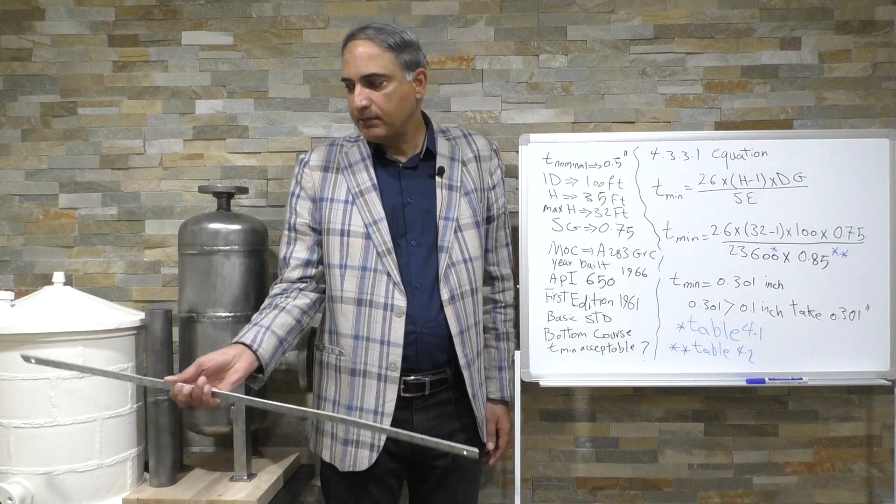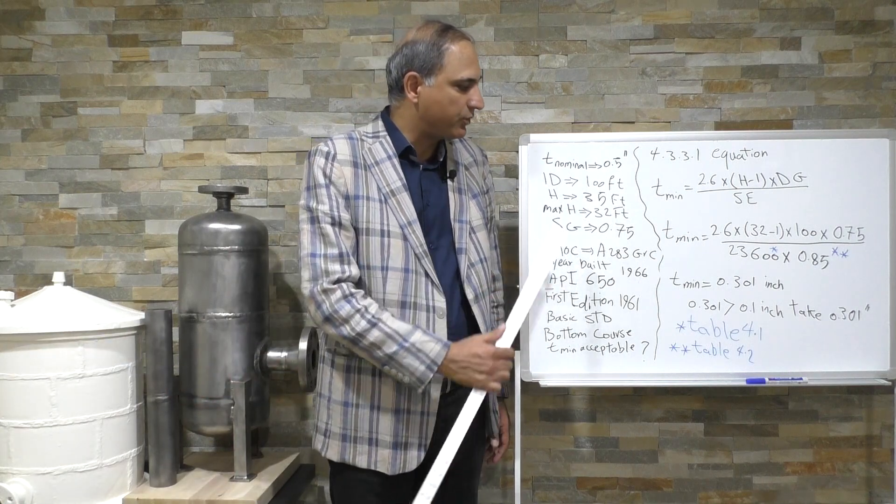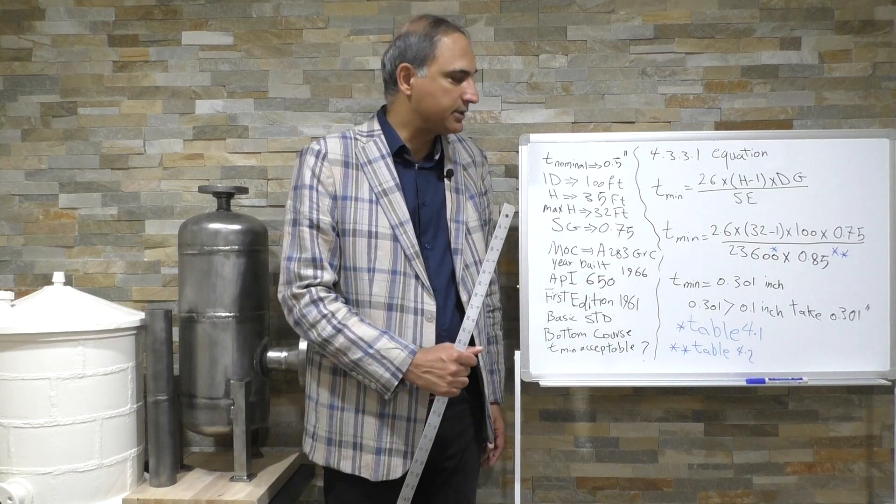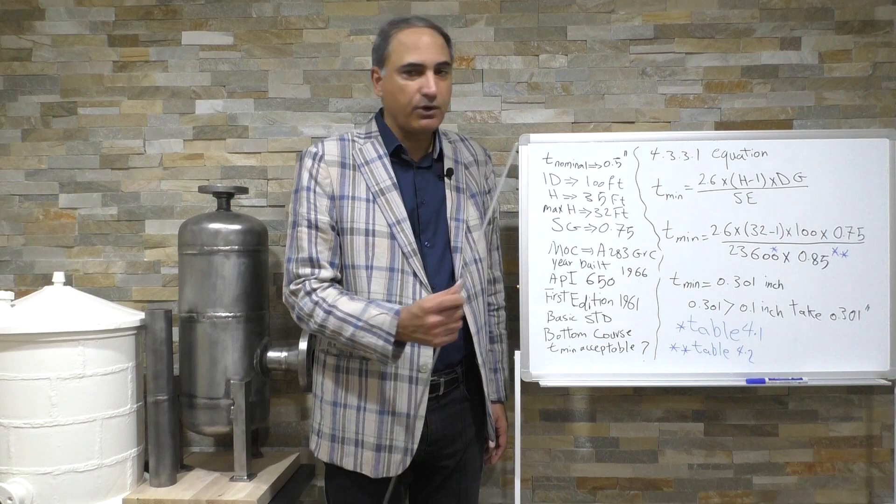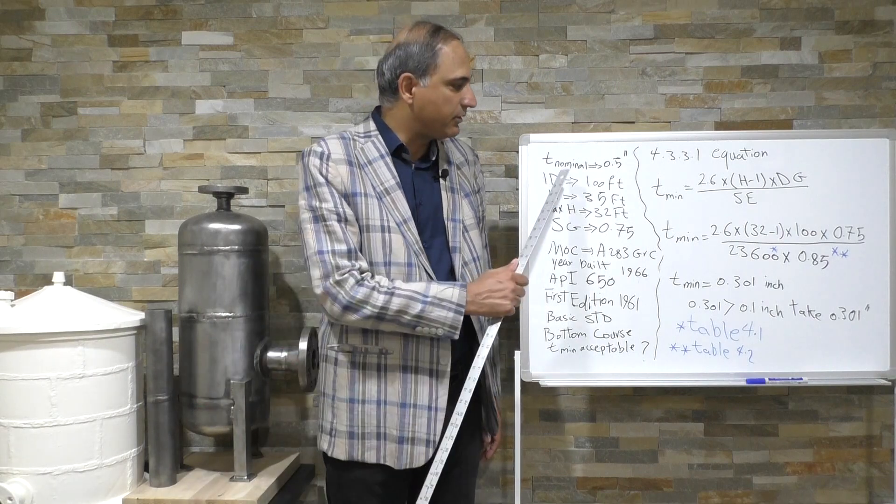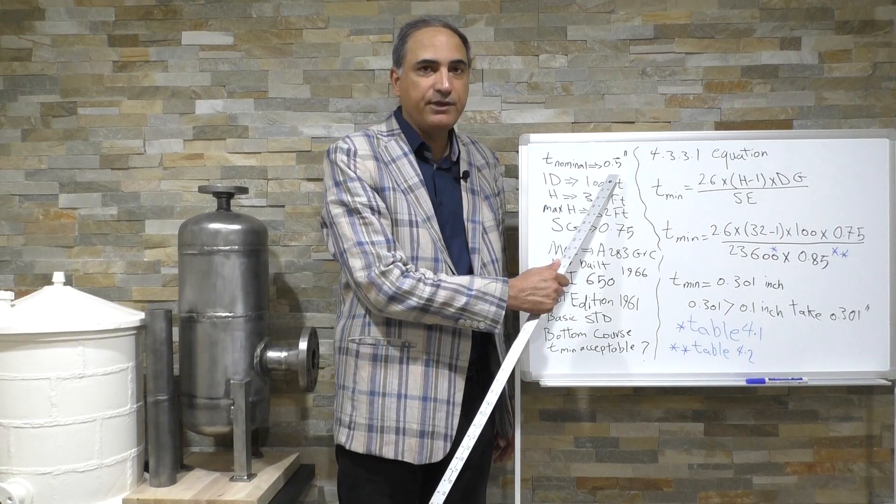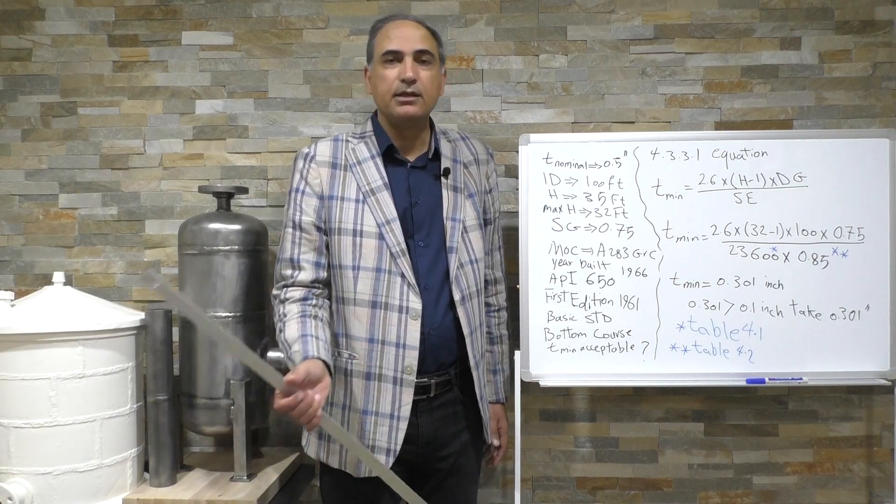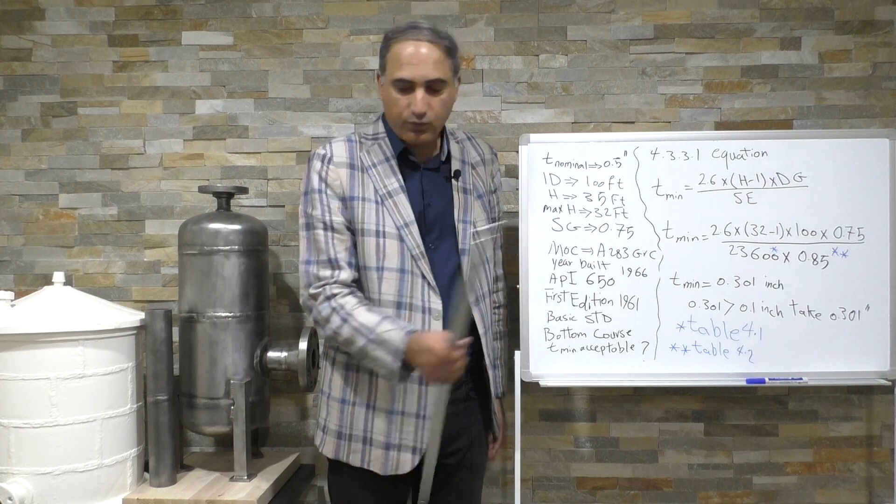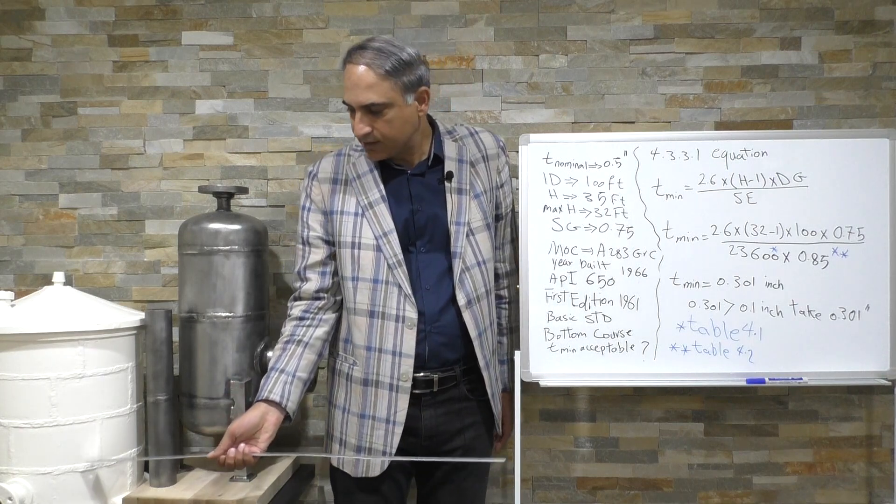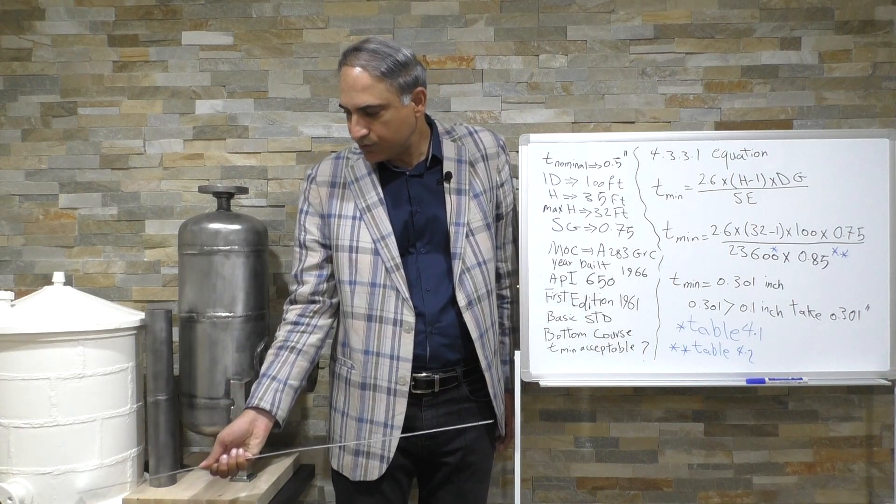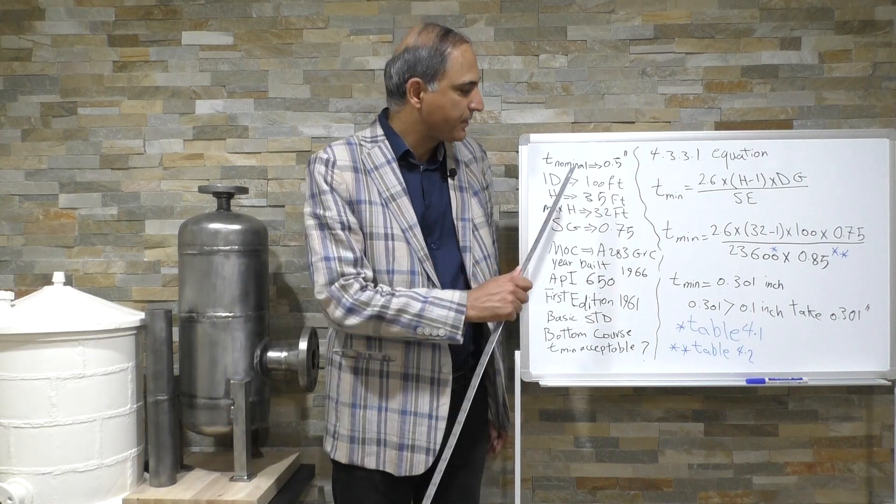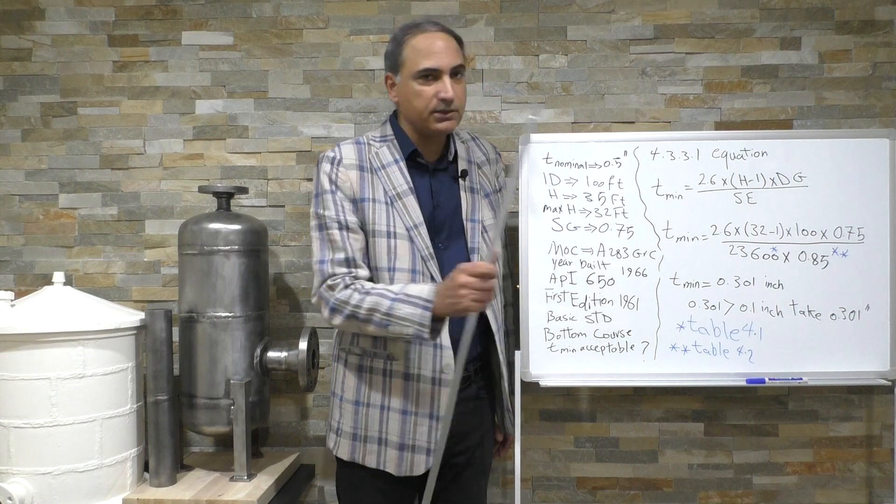We're having a demo storage tank in here and then some givens for our problem that we're going to use an equation and solve this problem. So for our demo storage tank, our nominal thickness is half inch. Consider the nominal thickness the day that they purchased this plate is half inch for first shell course. You can see this is a first shell course. For this first shell course our nominal thickness is half inch and the inside diameter is 100 feet.